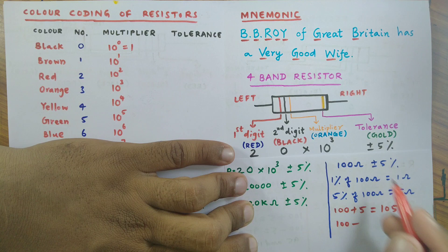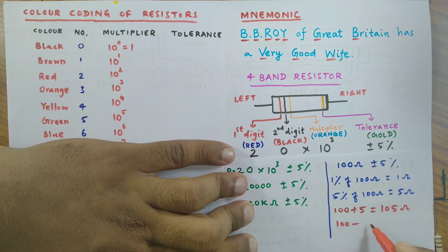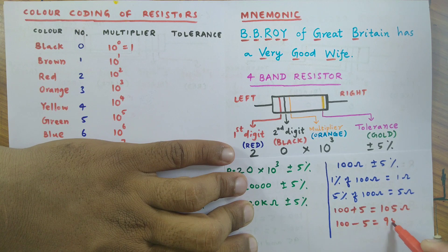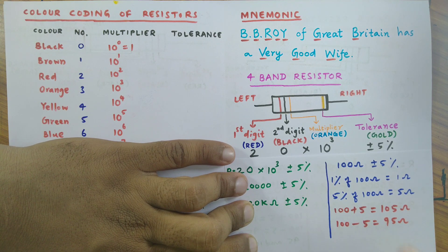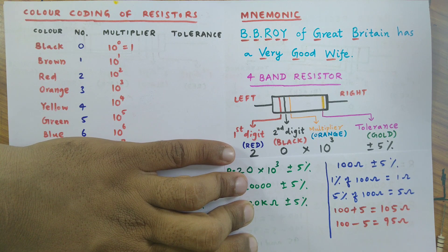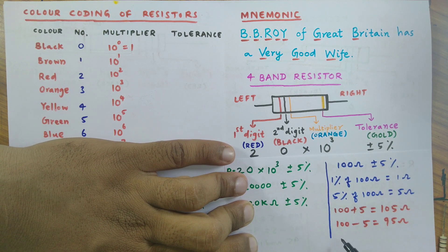Then I take 100 again, then minus from here, then 5 from here, and after subtraction I get 95 ohm. This shows that the resistance of this resistor with five percent tolerance will lie between 95 ohm and 105 ohm.